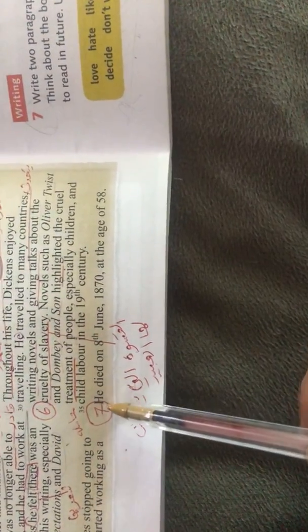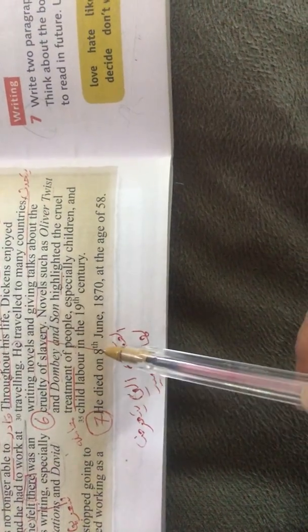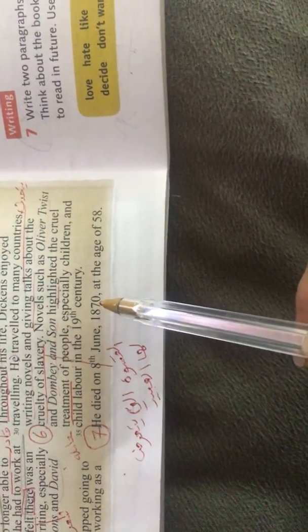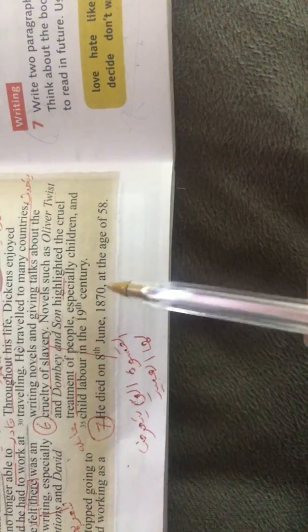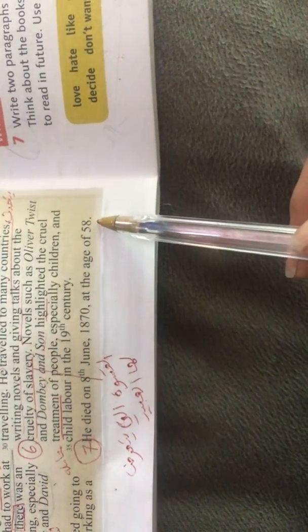The last paragraph. Death. He died on 8th of June 1870. How old was he when he died? He was 58. The same as the number of the page.